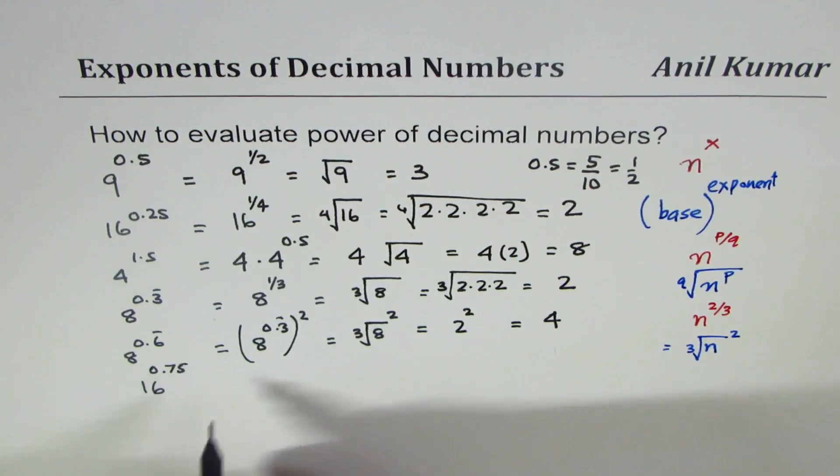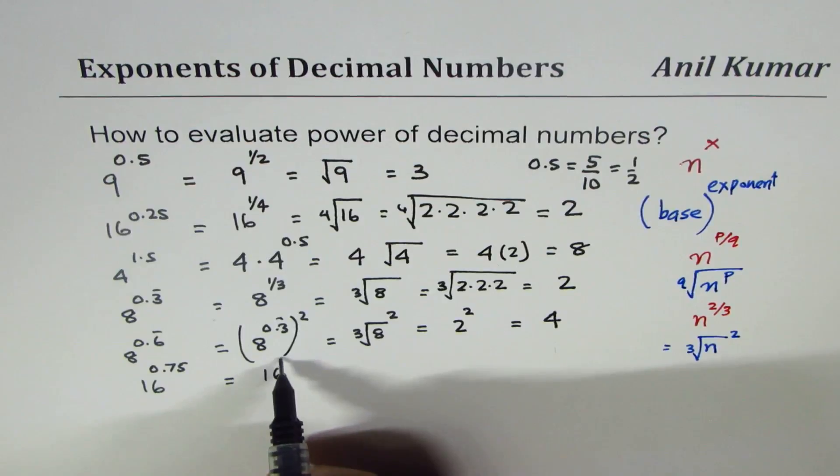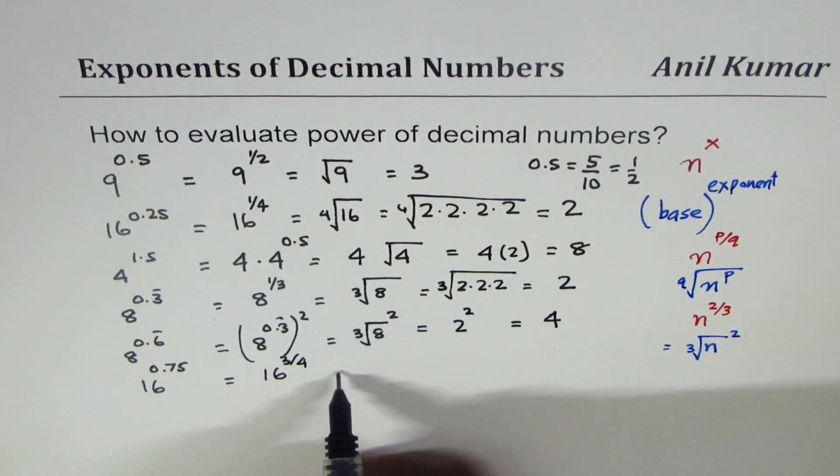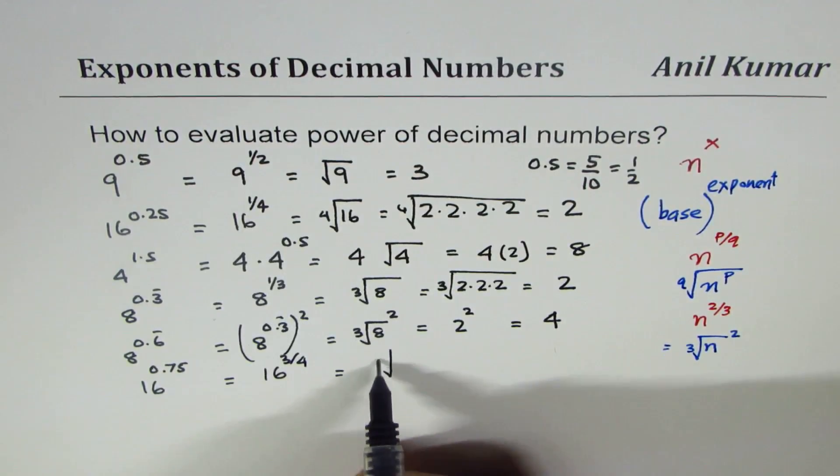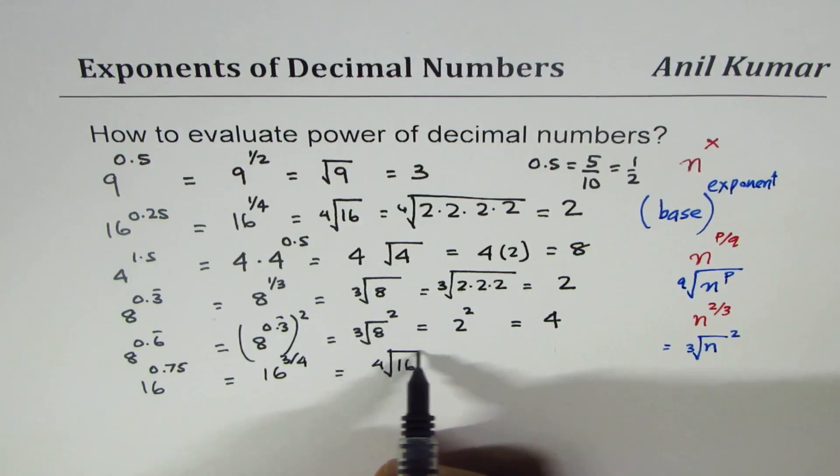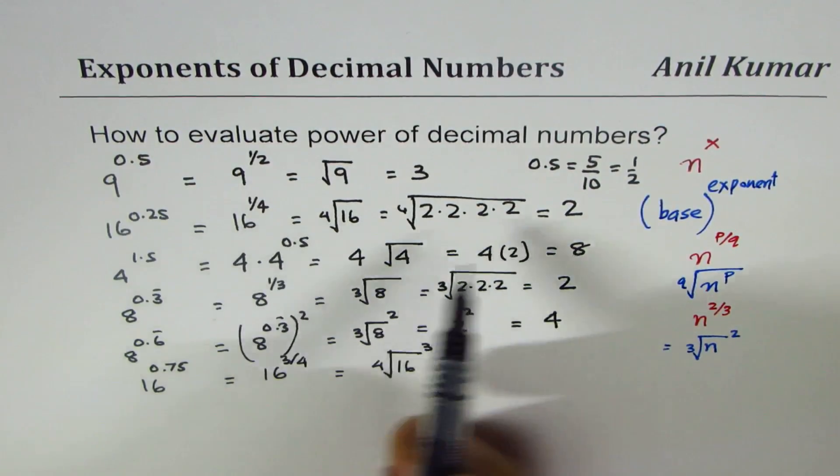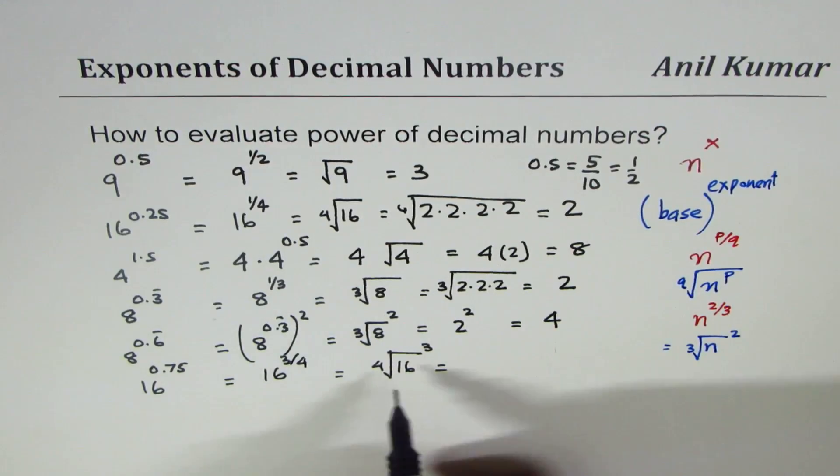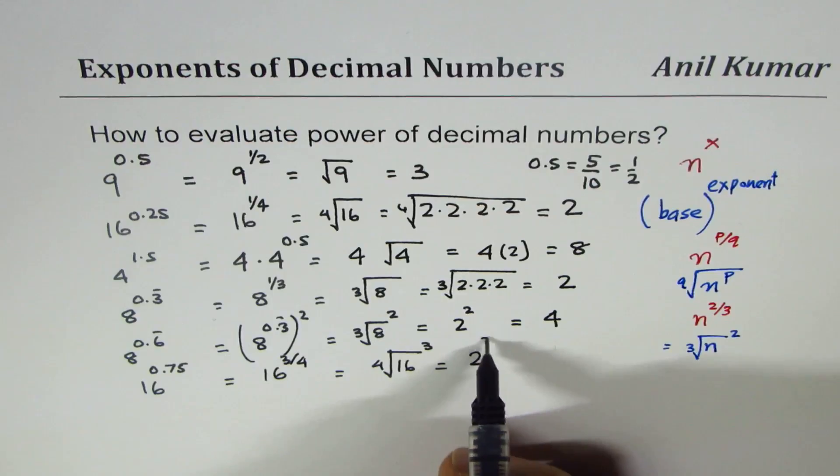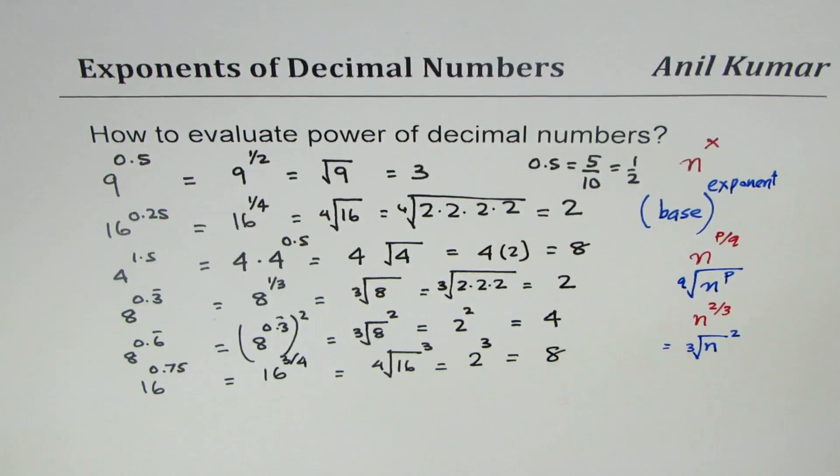16 to the power of 0.75. First step is to convert that to fractions: 75 over 100 or 3 over 4. So that means fourth root of 16 and then cube it. Fourth root of 16 we already calculated as 2, so we get 2 cubed, which is 8.